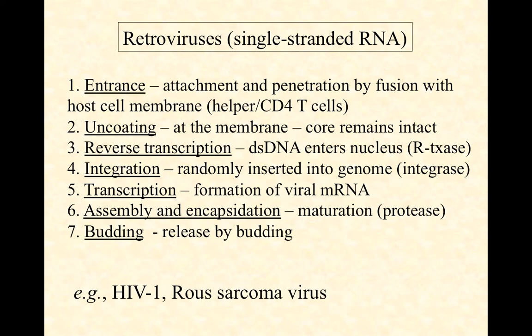Finally, new virions are released by budding — because they are enveloped variants, they squeeze out and take some host cell membrane with them. They carry viral spikes on their surface that allow attachment to the next CD4 T-cell, and the cycle continues.